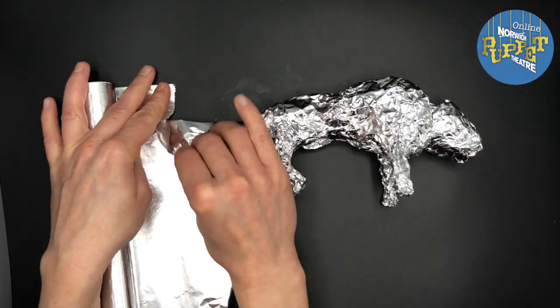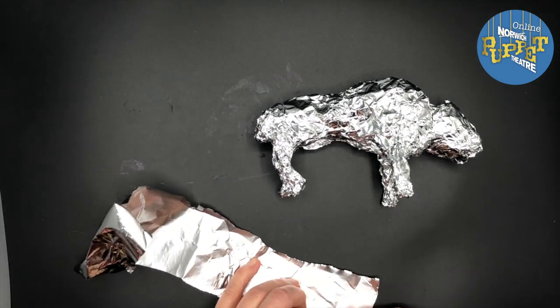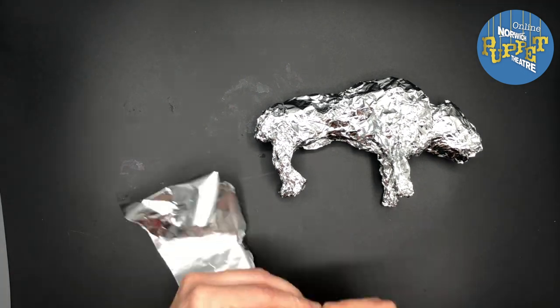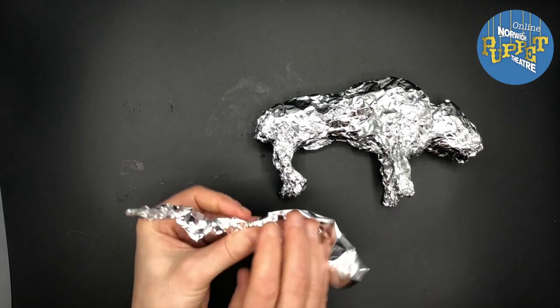I'm pretty happy with that shape now and I want to add some horns, so I'm going to take another piece of foil and then roll it and twist it and rub it between my hands to get a kind of horn shape.